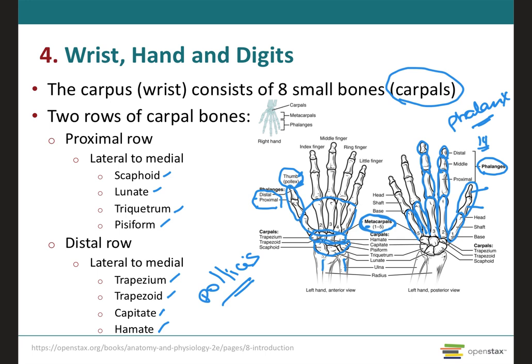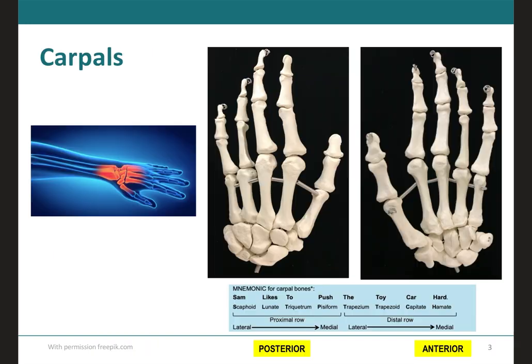I want to add that the scaphoid and the lunate are the ones that will articulate with the radius, the triquetrum will articulate with the ulna, and the pisiform will not articulate with the forearm at all.